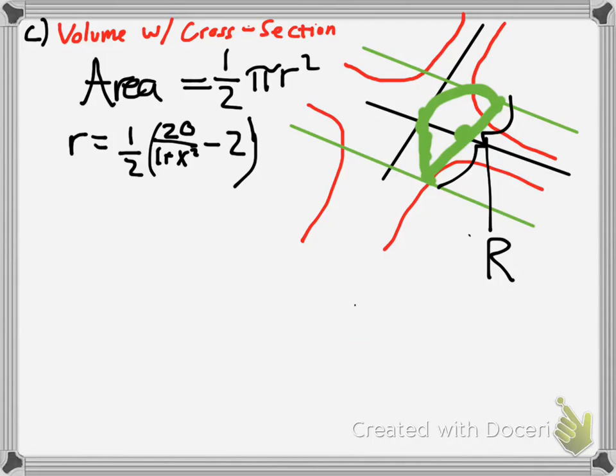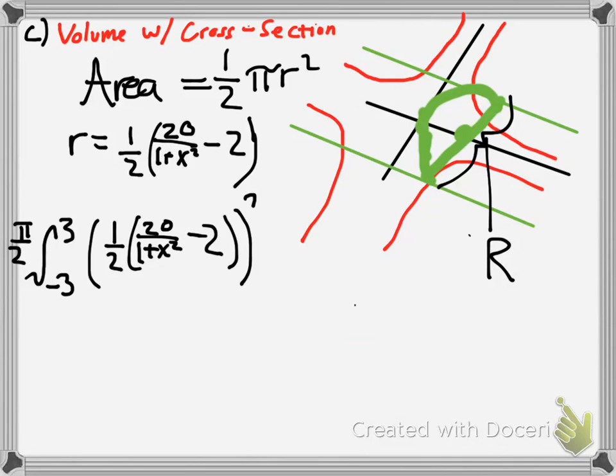So, now we simply have to integrate from, we know where the intersection points are still remain the same, limits of integration are negative 3 to 3. And, we know that our radius is 1 half 20 over 1 plus x squared minus 2. So, we're going to have to square that and multiply by 1 half pi. So, why don't we just put that over here as pi over 2 on the outside, and then multiply by the radius. So, here's the radius. And, remember to square that, dx.